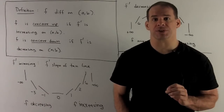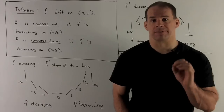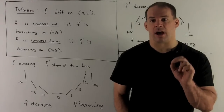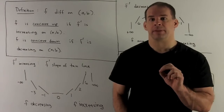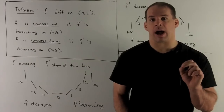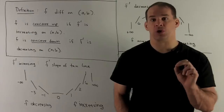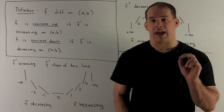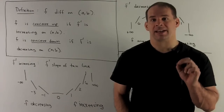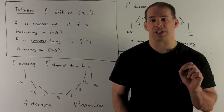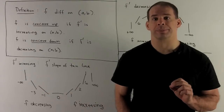Let's start with some definitions. f is said to be concave up on an interval (a, b) if the first derivative of f, f prime, is increasing on that interval. Likewise, f is said to be concave down if f prime is decreasing on that interval.